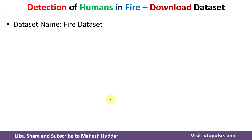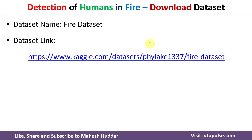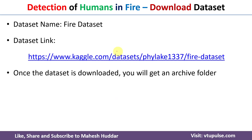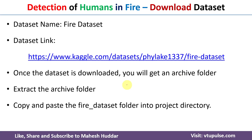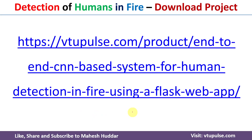To download the dataset, you can use the link provided. The name of the dataset is fire dataset. Once downloaded, you will get an archive folder. Extract the archive folder and copy and paste the fire dataset folder into the project directory.